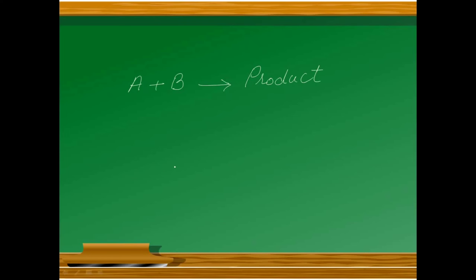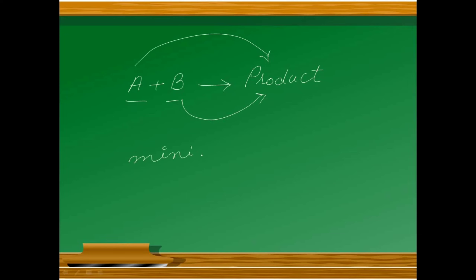We use a balanced chemical equation. We see that reactant A gives an amount of product, and reactant B gives an amount of product. The reactant that gives the less quantity of product — the minimum quantity of product — will be the limiting reactant.